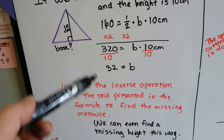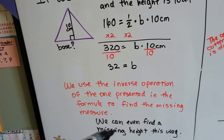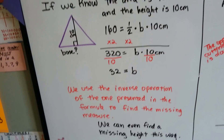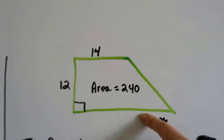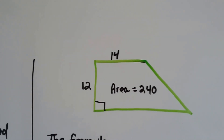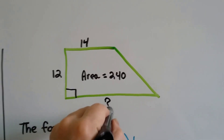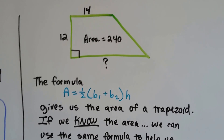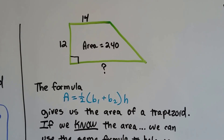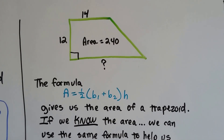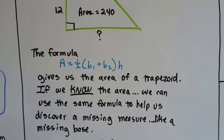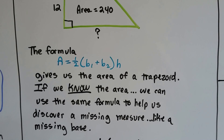As long as we plug the information in and slowly do inverse operations, we can get the variable isolated by itself on one side of the equal sign. For a trapezoid, if we know what the area is and we know that the top base is 14 and this one is 12, we can find out what the other one is by using the formula. The formula for the area of a trapezoid is A equals half times base 1 plus base 2 times the height. If we know the area, we can use the same formula to discover a missing measure, like a missing base.